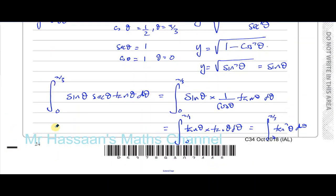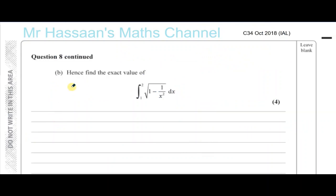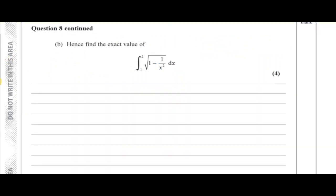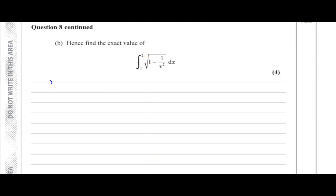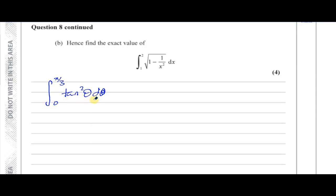Now we go on to part B: find the exact value of the integral. We've shown it can be rewritten as the integral of tan squared theta d theta. We do not have a direct integral for tan squared theta, but we do have one for sec squared theta — the differential of tan theta is sec squared theta, so the integral of sec squared theta is tan theta. If I can rewrite tan squared theta in terms of sec squared theta, I'll be able to integrate.